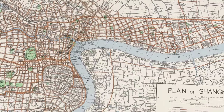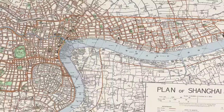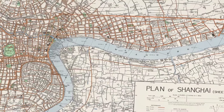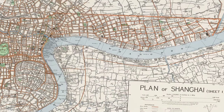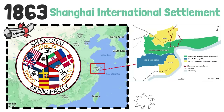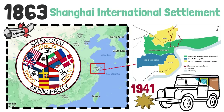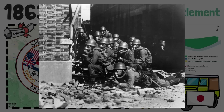As more foreign powers entered into treaty relations with China, their nationals also became part of the administration of the settlement. Around 14 countries were involved: the United Kingdom, the United States, Japan, France, Italy, Norway, Sweden, Denmark, the Netherlands, Spain, Portugal, Peru, Mexico, and Switzerland. The International Settlement came to an abrupt end in December 1941, when Japanese troops stormed in during World War II.